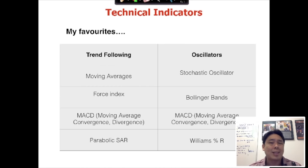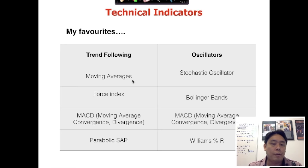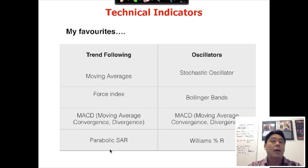Let me show you some of my favorite indicators. Some of them are more for trend following, and some are more for counter-trend trading, which is a bit more advanced — unless you're very experienced or a professional, you may not want to attempt counter-trend trading unless it's paper money. For trend following, my favorites are moving averages that tell us the direction of the trend, the Force Index based on volume, MACD for momentum, and Parabolic SAR as a momentum indicator. These tell us when momentum is in our favor.